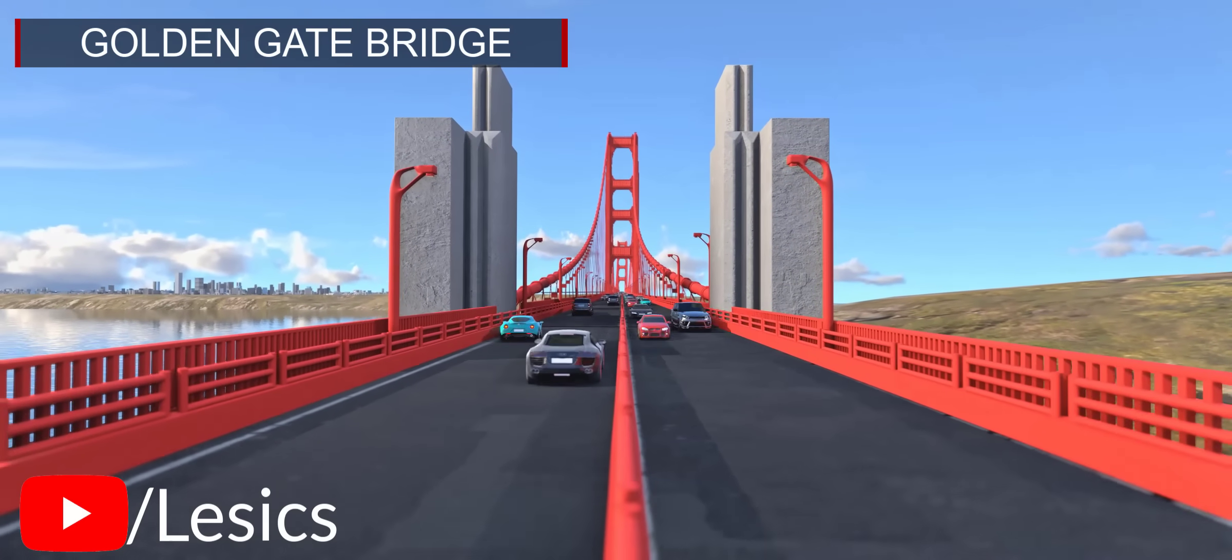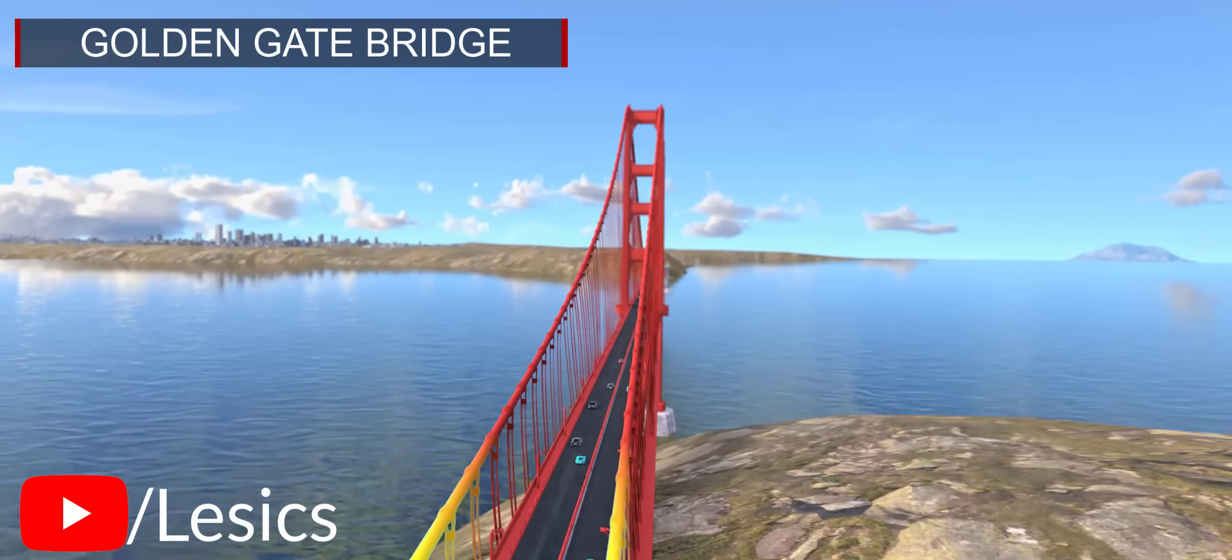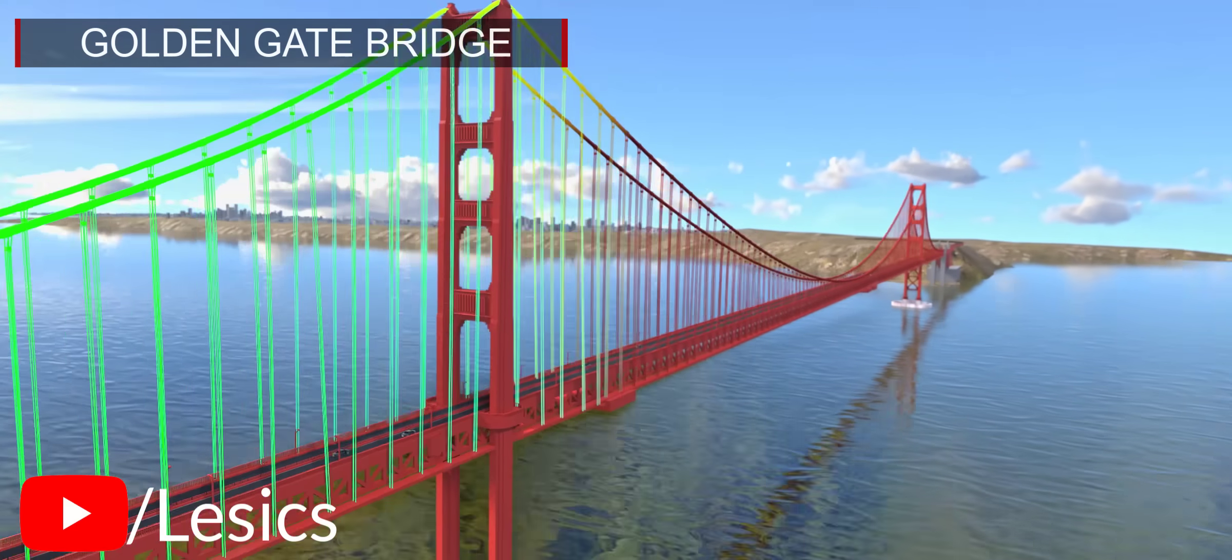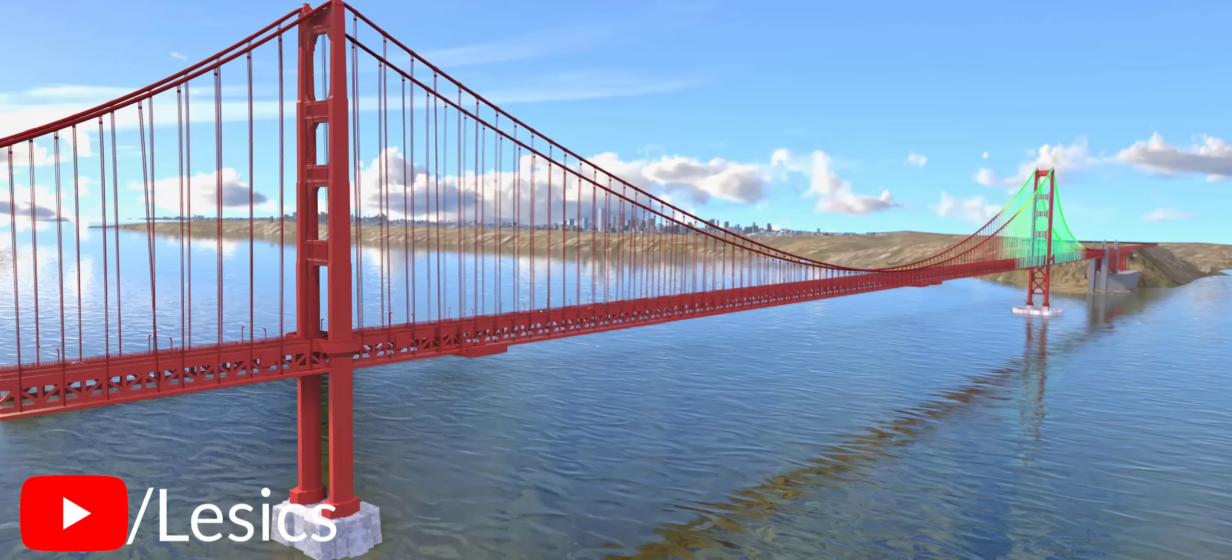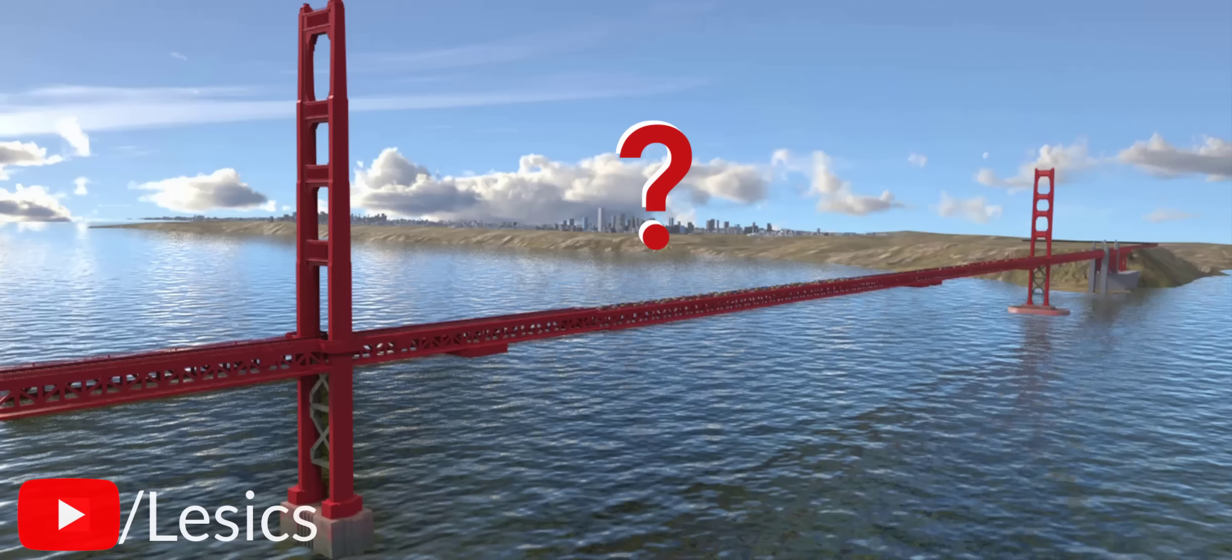When observing the Golden Gate Bridge floating over the Pacific Ocean, your eyes may be drawn to its beautiful suspension cable system. What would happen to the bridge if this cable system was not present?